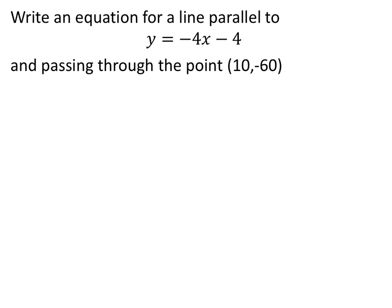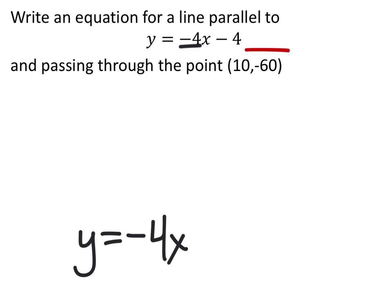Since this line is parallel, it's going to have the same slope, which in this case is negative 4. So that tells us right away that the equation will be y equals negative 4x. The difference in this case is that it needs to pass through this point. We can use point-slope form or slope-intercept form in order to find the y-intercept.